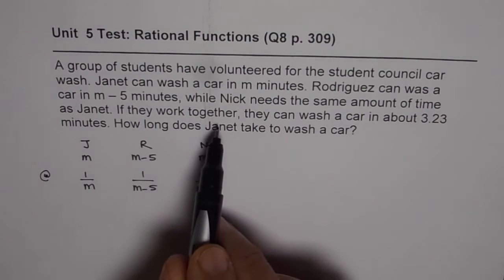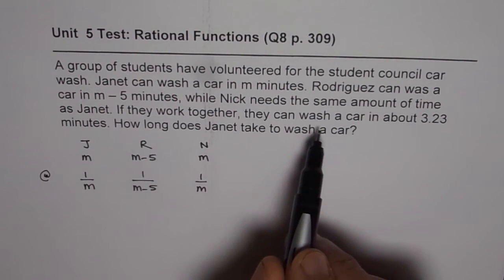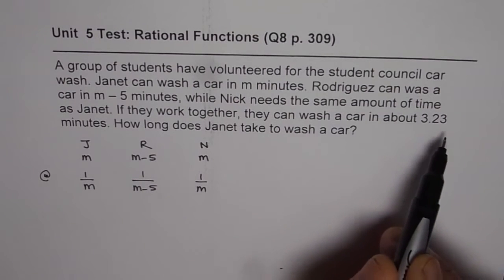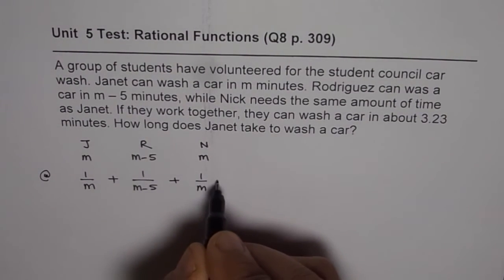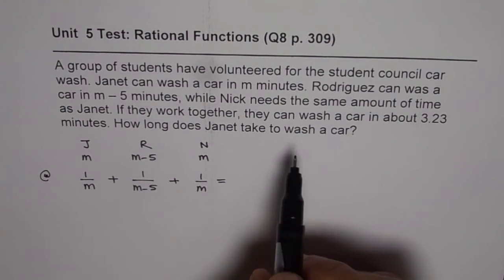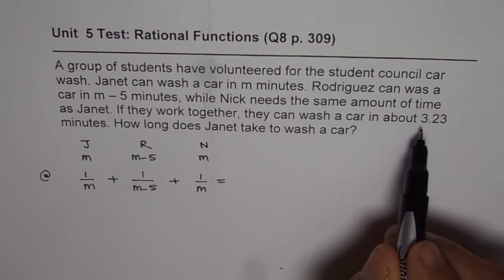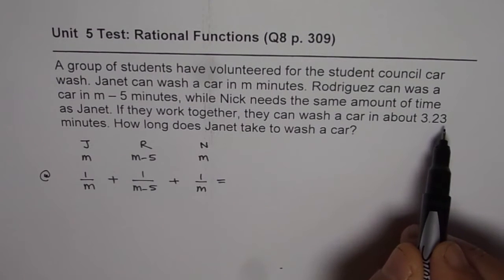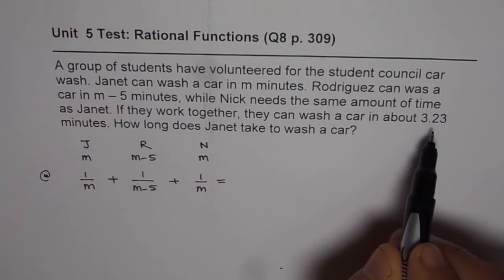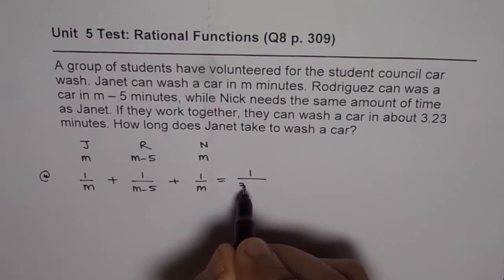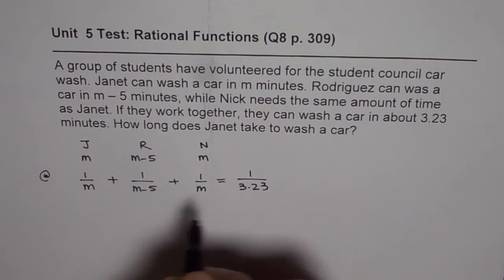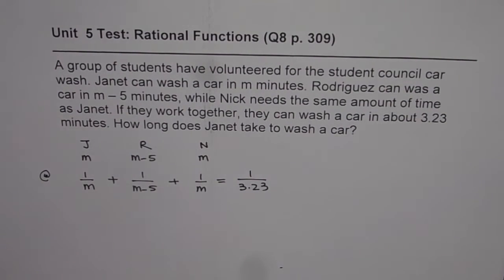Now, as given, if they work together, they can wash a car in 3.23 minutes. That means, if you add them up, they will take to wash a car about 3.23 minutes. So, in 1 minute, how much of this job will be done? This will be 1 over 3.23. That is how you get your equation. Equating the rates, you get the equation.